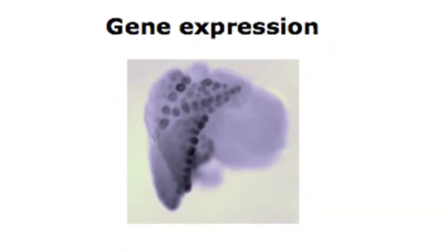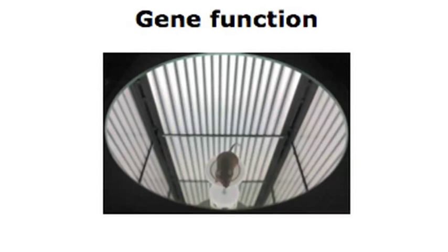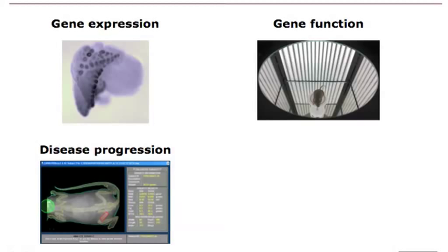We use these animals for looking at gene expression — if you're not sure where a gene is made or the cell type, you can tag that gene with something that shows it up. This picture of an embryonic lung shows specific cell types where nobody was sure where a gene was expressed. We also use them for gene function — for example, an optokinetic drum where the mouse sits on a platform, lines rotate around it, and the mouse follows with its head until the lines decrease to the point it no longer follows, measuring the mouse's eyesight.